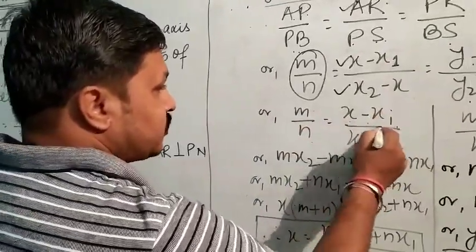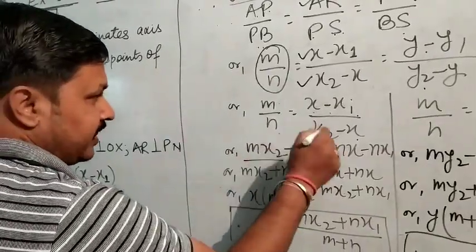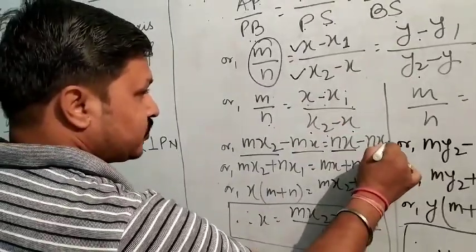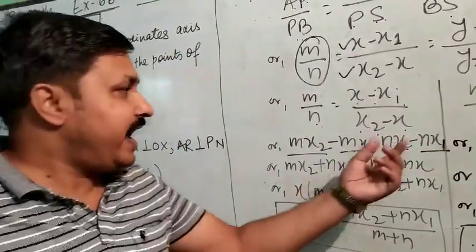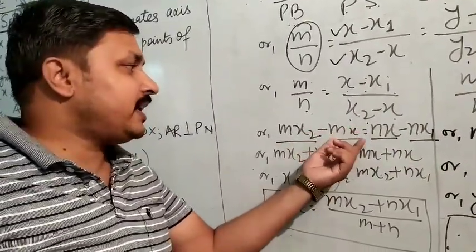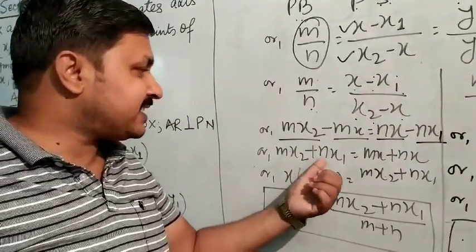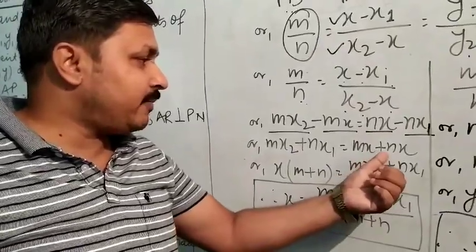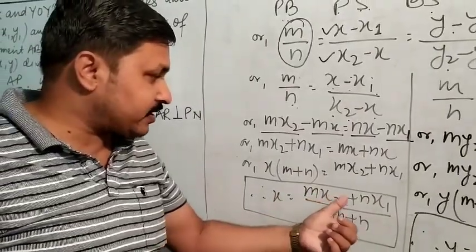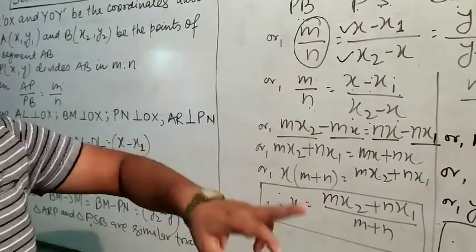So m by n equals x minus x1 by x2 minus x. By cross multiplication: m(x2 minus x) equals n(x minus x1), giving mx2 minus mx equals nx minus nx1. Rearranging: mx2 plus nx1 equals mx plus nx, so x times (m plus n) equals mx2 plus nx1. Therefore x equals mx2 plus nx1 by m plus n. This is the x coordinate of point P.